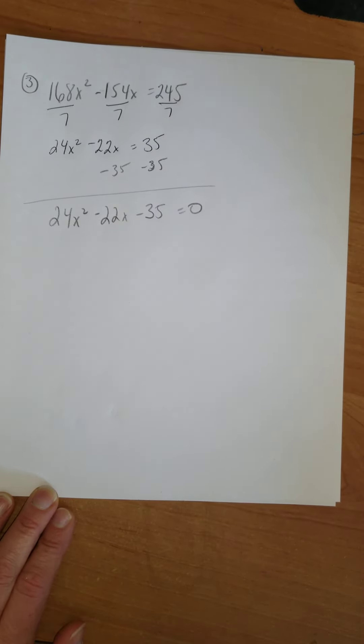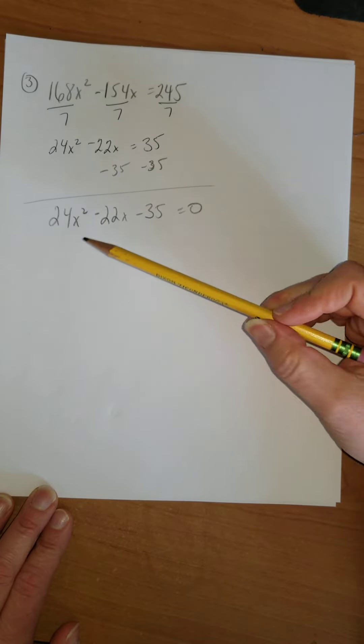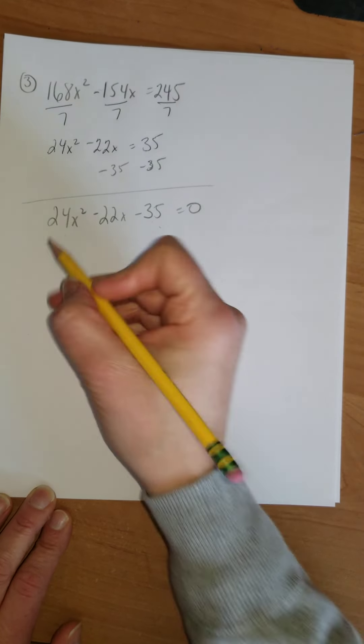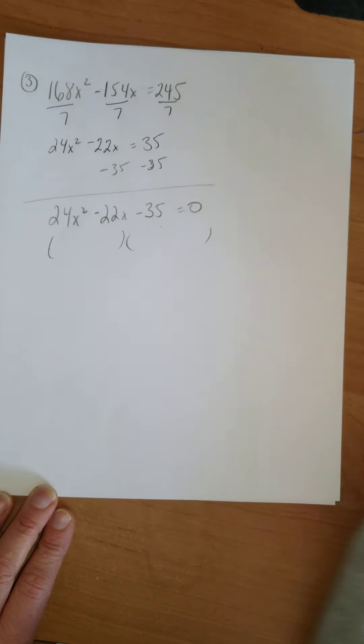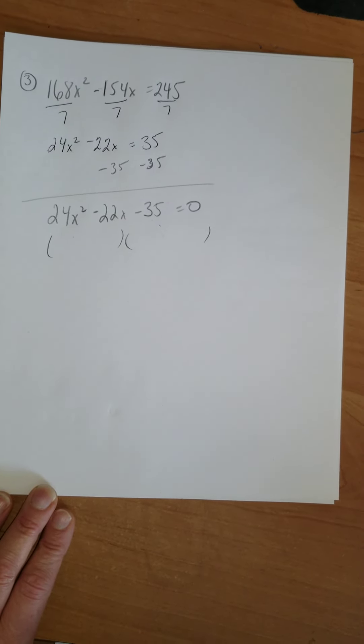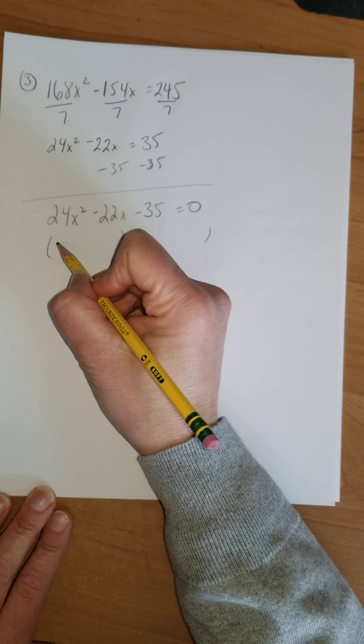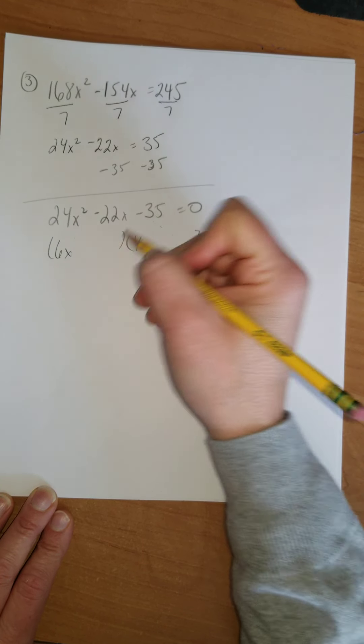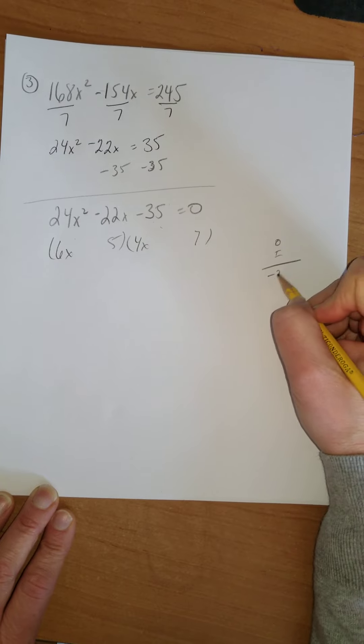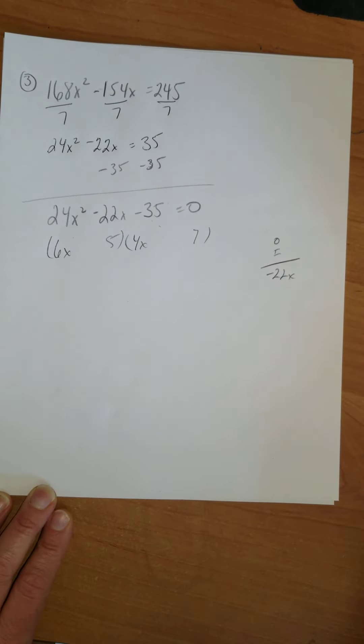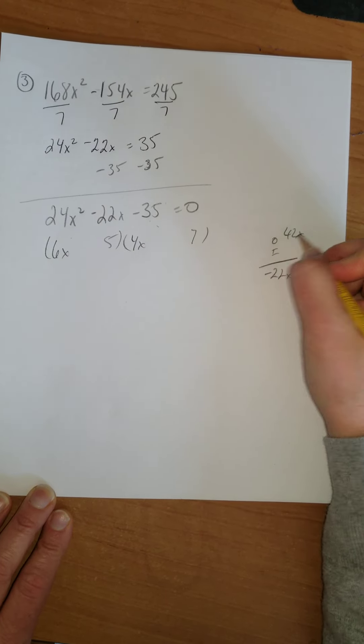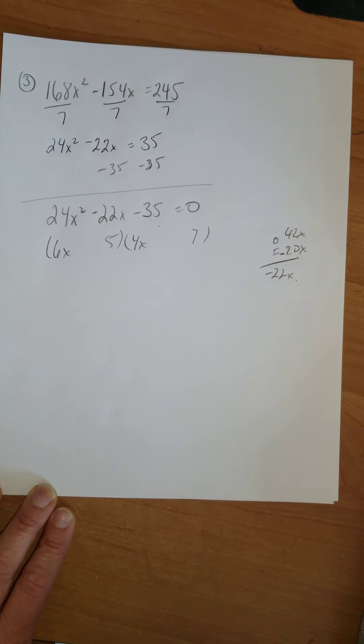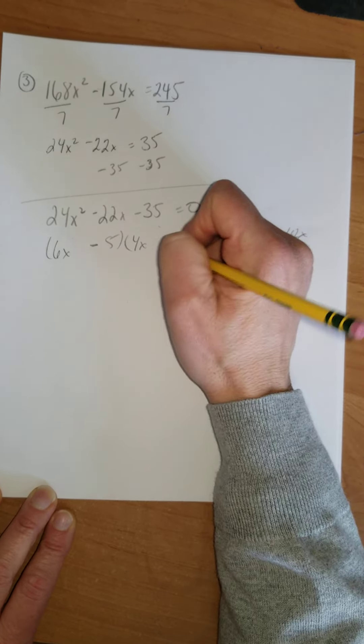And I know I can't get that down anymore because nothing goes into 22 other than 2 and 11, and 2 or 11 does not go into both of those. So let's factor this. You could do the box and diamond from algebra, but I'm going to give this a shot. Let's make this a 6x and a 4x. 35 is probably going to be 7 and 5. So let's go 7 here and 5 here. The outside and inside here is going to be negative 22x. The signs have to be different. It's negative 35. On the outside, I have a 42x. On the inside, I have a 20x. It looks like I got lucky. 42 minus 20 is negative 22.